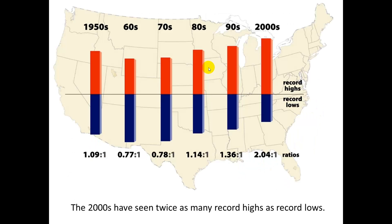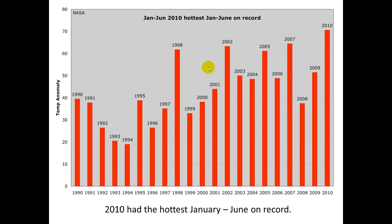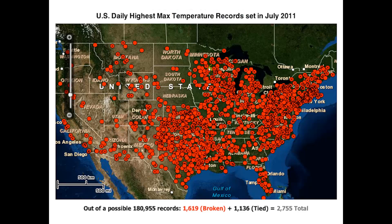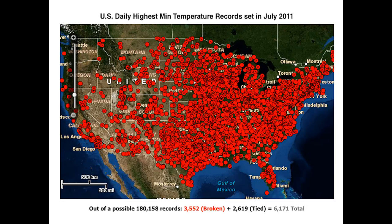We do know that the 2000s have seen twice as many record highs as record lows, so here's some good evidence. And we've seen that 2010 was the hottest January through June on record. And this is another graph showing heat to cold records, many more heat records than we do see cold records. We have lots of new highest max temperature records set in July 2011.